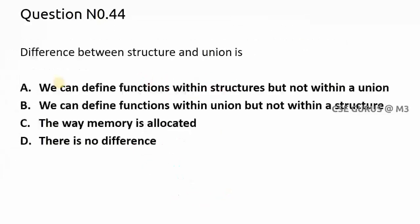This is a theory question on the difference between structure and union. Option D — there is no difference — is not correct. Options saying functions can be defined within structures but not unions, or vice versa, are also not true. The main difference is in memory allocation: in a structure, memory is allocated for each individual variable separately, whereas in a union, common memory is allocated. So answer C is correct.